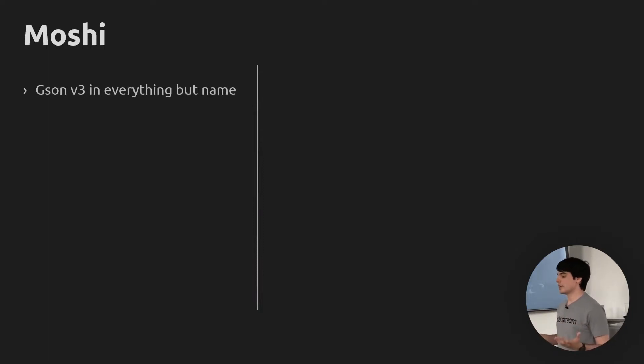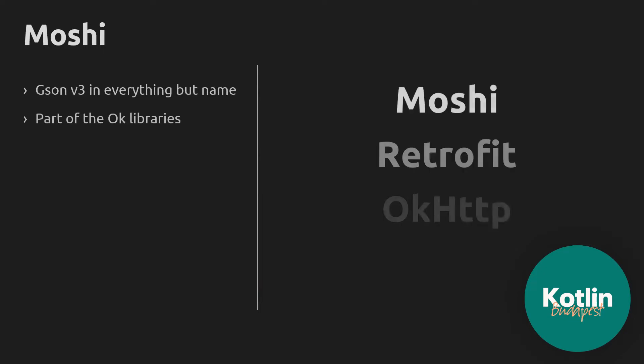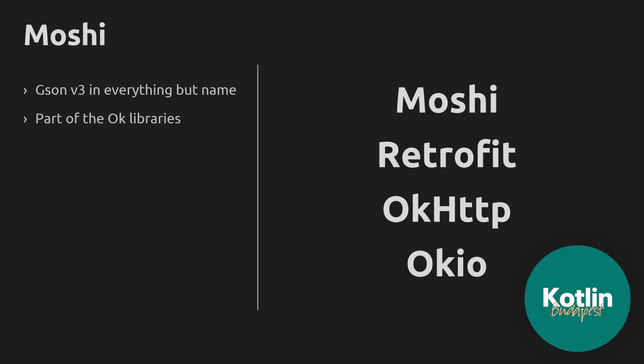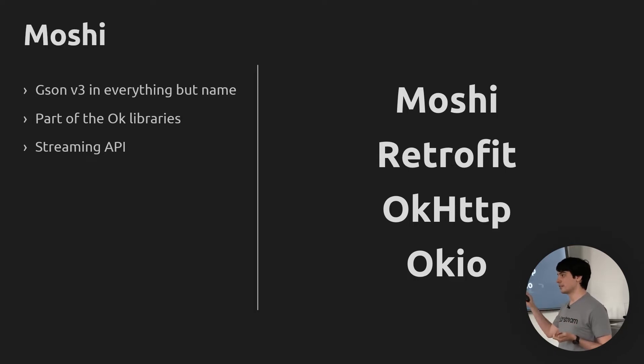Moshi is a serialization library — it's Gson v3 in everything but name, which is stolen from a Reddit comment by Jake Wharton. Moshi is part of the OK group of libraries, so it integrates really nicely with other Square libraries: Retrofit, OkHttp, and OkIO, which you're likely using in Android applications for your networking needs anyway. It's really efficient when you're using it combined with these other libraries. Moshi has a streaming API, which lets you do parsing and serialization while the data is still coming in from the network, so that the costs of serialization and parsing are amortized compared to the network latency.